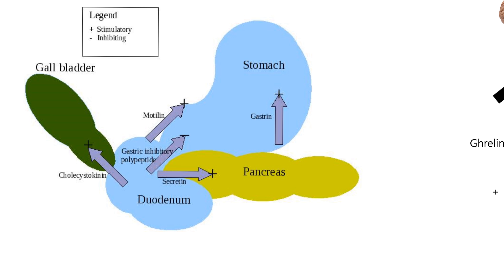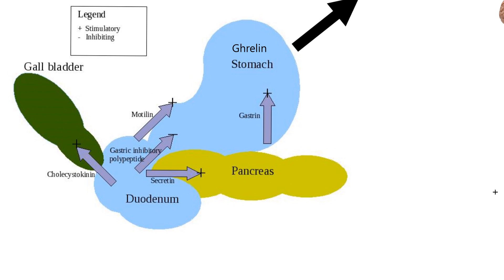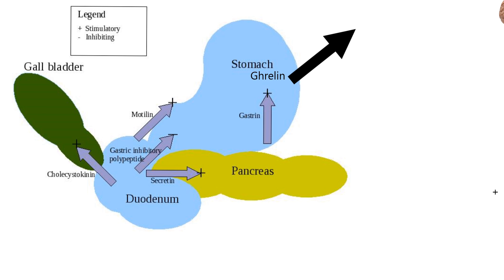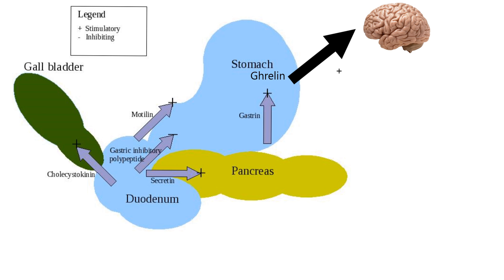Now I want to add another hormone: ghrelin — you pronounce it like you're grilling outside on the barbecue. Ghrelin is made in the stomach. I'm adding it to the diagram with an arrow going to the brain with a plus sign. What I'm trying to show is that ghrelin is made in the stomach, carried in the blood to the brain, and has a stimulating effect on the brain. We'll find out all these actions shortly.